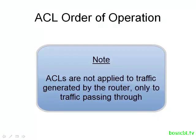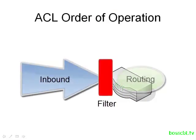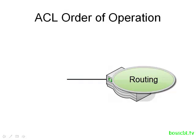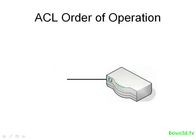You can apply an Access List to inbound or to outbound traffic. When you apply an Access List to inbound traffic, that filtering takes place before any routing decisions are made. However, when you apply an Access List to outbound traffic, the router first determines where a packet should go — that routing process happens first — and if that packet exits an interface where an outbound Access List is configured, then filtering takes place. So inbound: filtering first, then routing. Outbound: routing first, then filtering.